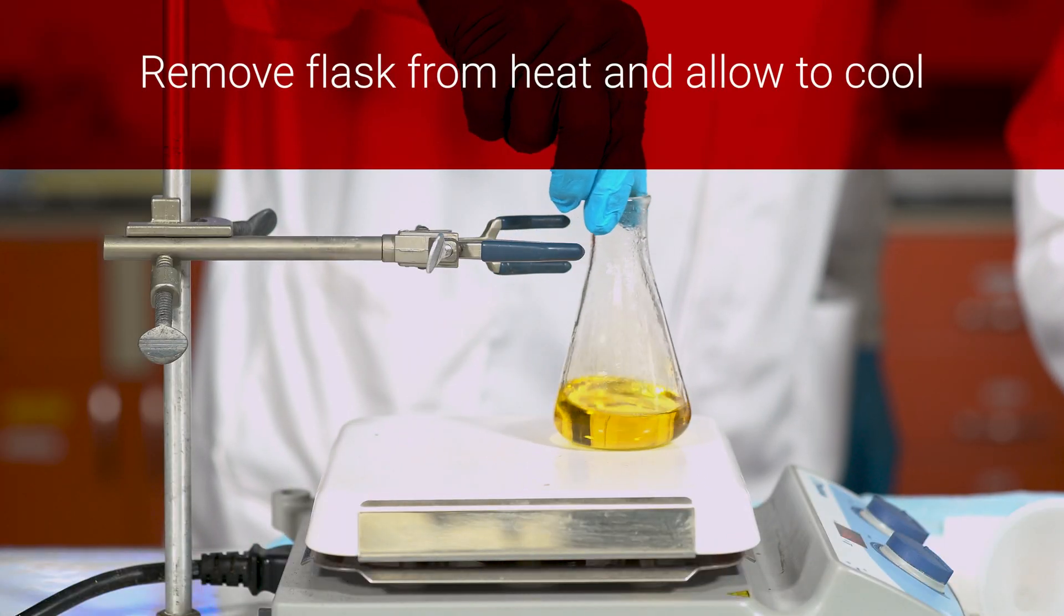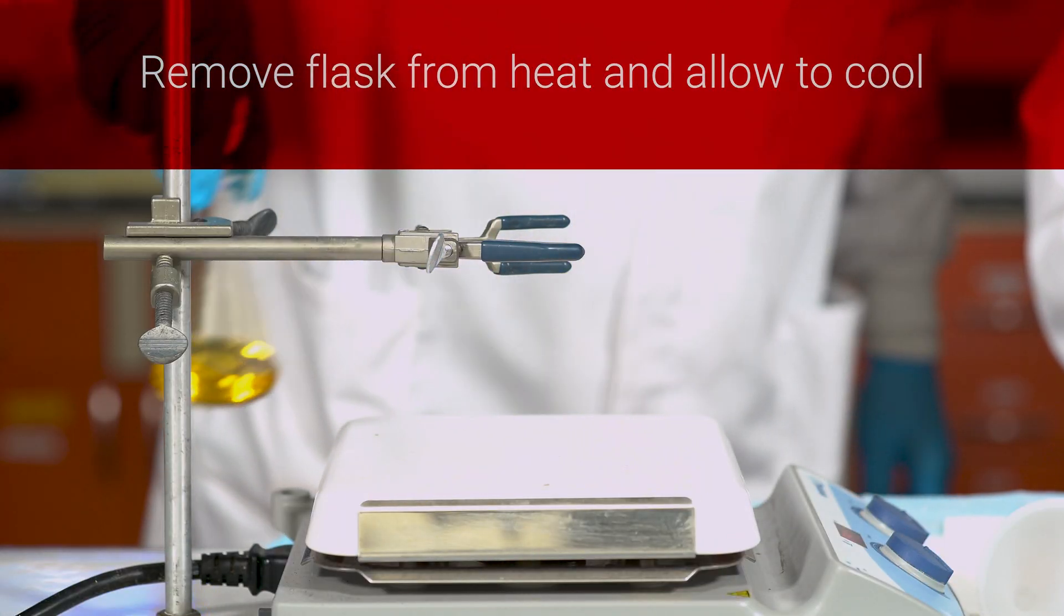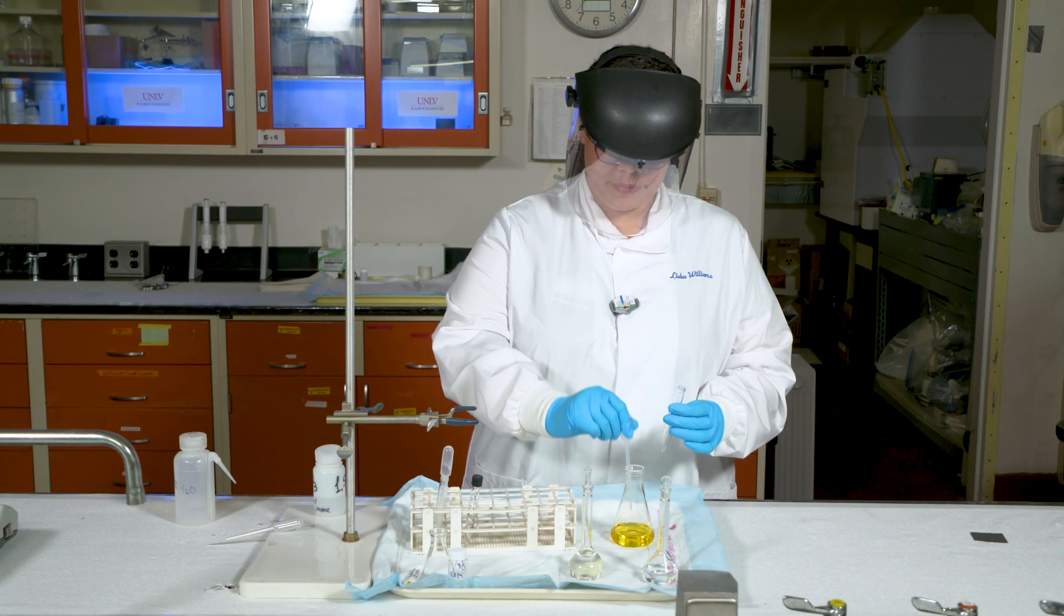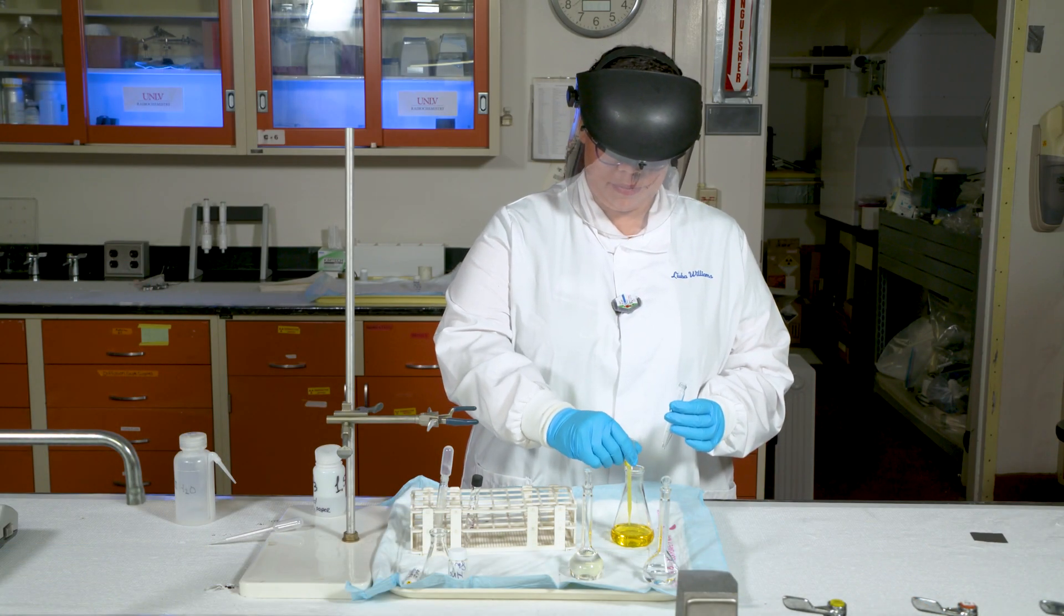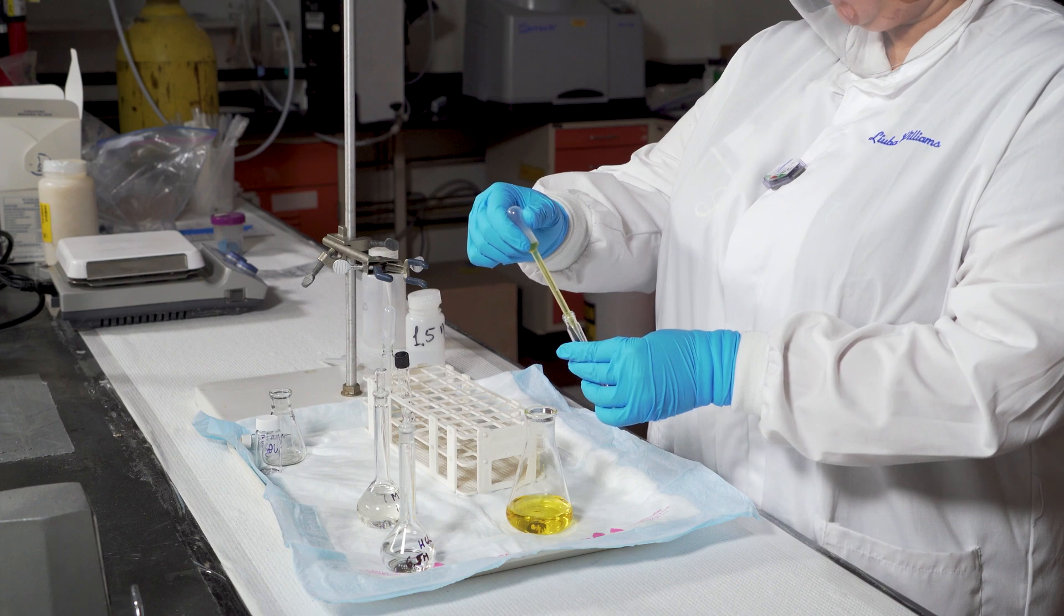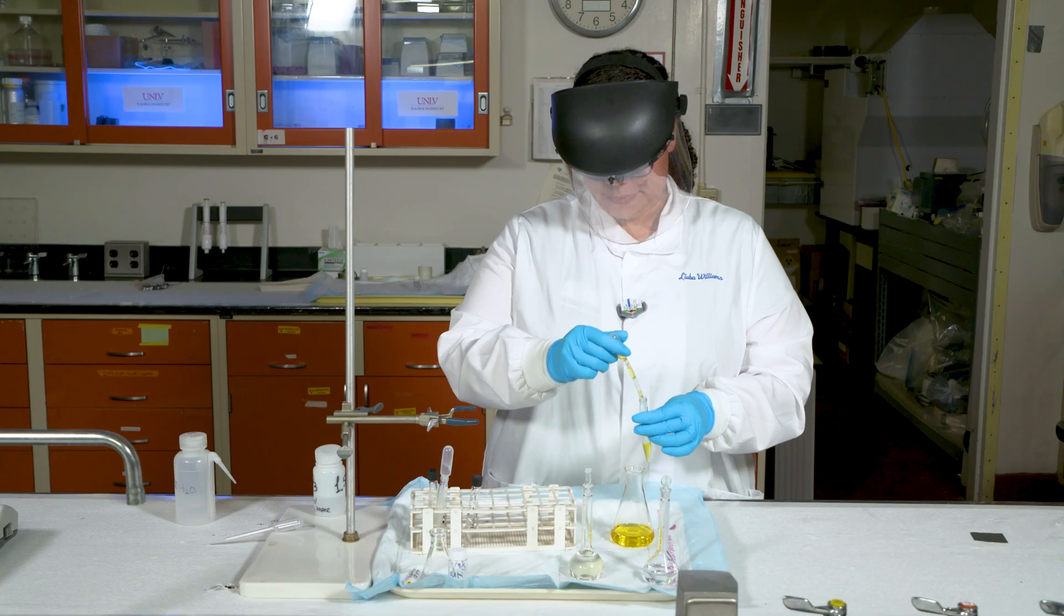Once the sample has reached this yellow color, the flask can be removed from the heat and allowed to cool. A portion of the cooled uranyl nitrate was added to a glass centrifuge tube with 30% tributyl phosphate in dodecane.